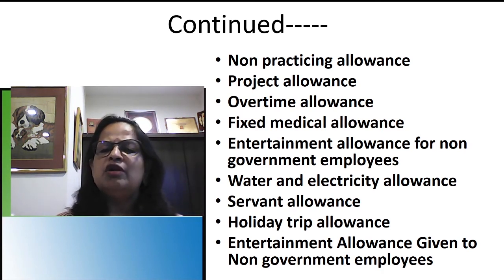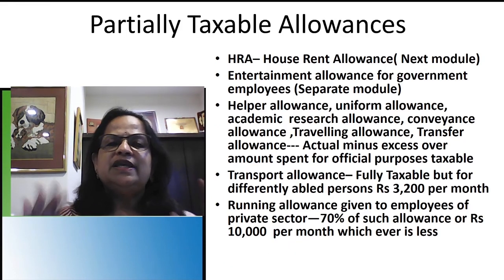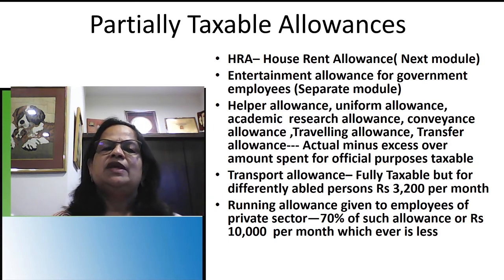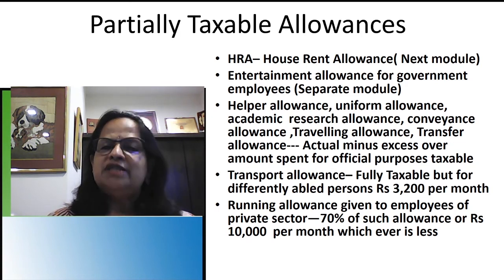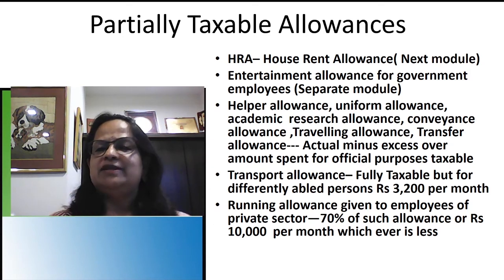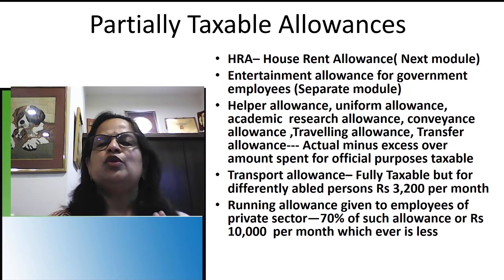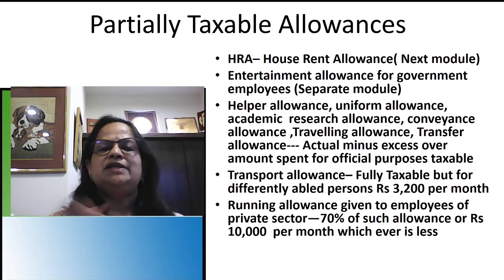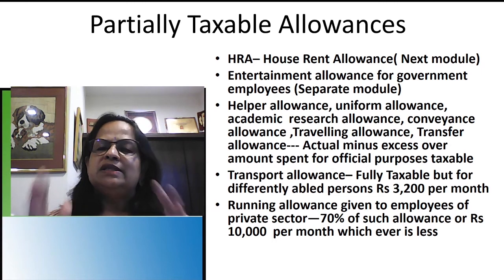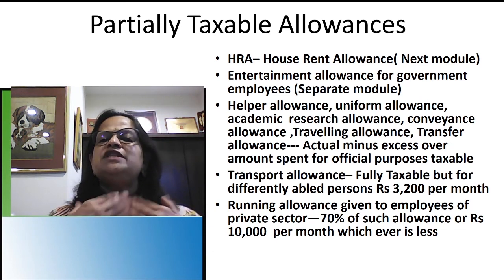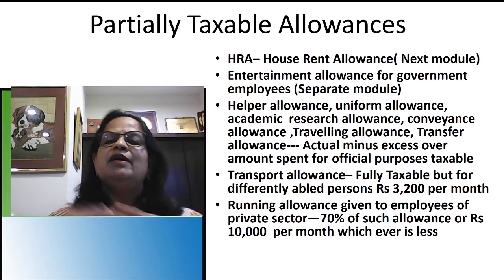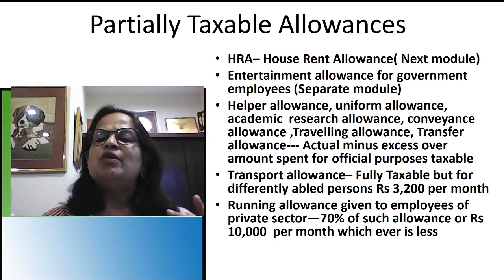Partially taxable allowances include house rent allowance, which will be explained in the next module with a special computation. Entertainment allowance for government employees is also partially taxable and will be covered separately. For other allowances like uniform allowance, helper allowance, academic research allowance, conveyance allowance, travelling allowance, and transfer allowance — the taxable amount is: actual amount received minus actual amount spent. If any excess remains, it is taxable.